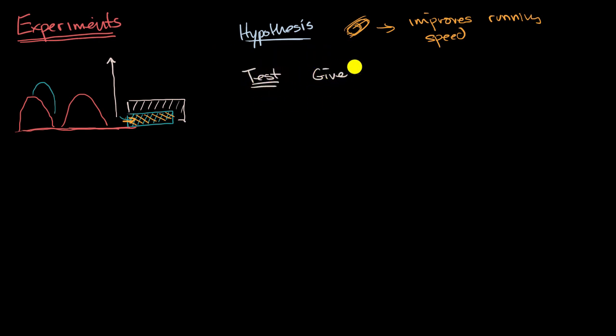At first you might say give the pill to some runners and test their 100-meter time before the pill and after. And you might say, maybe if their times improve after, maybe my hypothesis is correct. Pause this video and see if you feel comfortable with this test, this experiment.